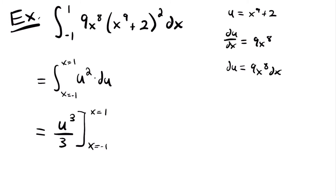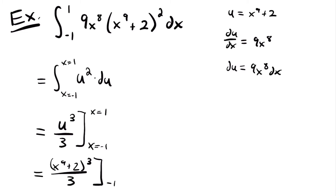We now have two options to solve this definite integral. I'll show the first method here: substitute back what we set u equal to in terms of x, then evaluate. Plugging u equals x to the 9th power plus 2 back in, we get x to the 9th power plus 2, cubed, divided by 3, evaluated from negative 1 to 1. Now the expression is in terms of x, so we can plug the bounds in directly.